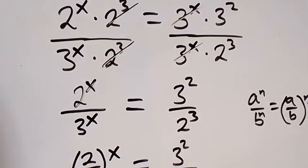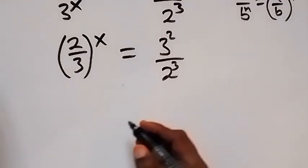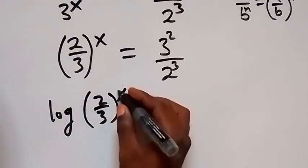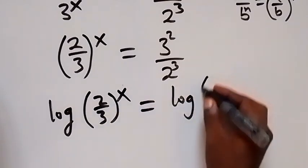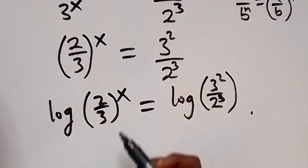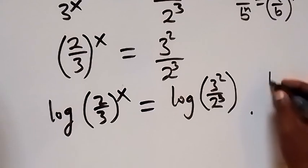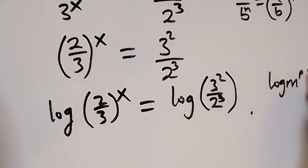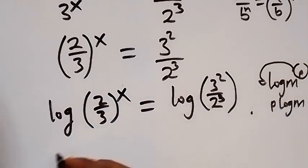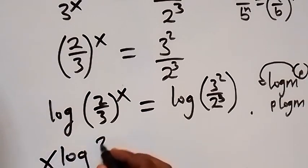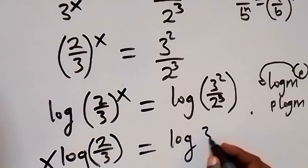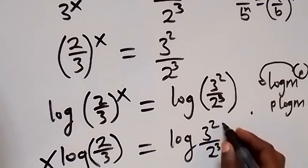In the next step we take the log on both sides, so log of (2/3) to the power of x equals log of (3 squared over 2 cubed). Then we apply the power rule of logarithms on the left hand side: log n to the power of p means the power p can be brought to the front, so x comes out and we have x log(2/3) equals log(3 squared over 2 cubed).